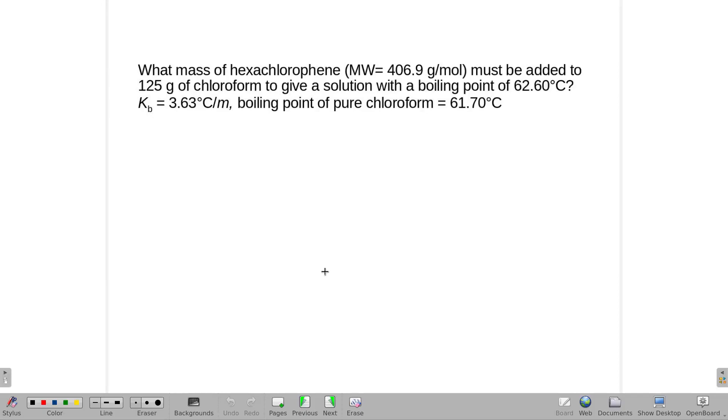What mass of hexachlorophene must be added to 125 grams of chloroform to give a solution with a boiling point of 62.6, given a Kb of 3.6, and a boiling point of pure chloroform of 61?